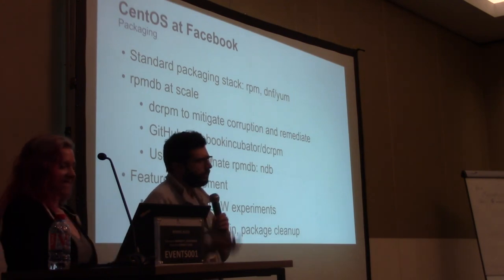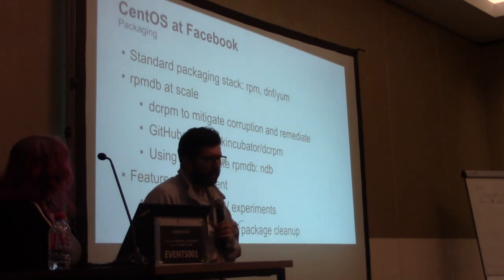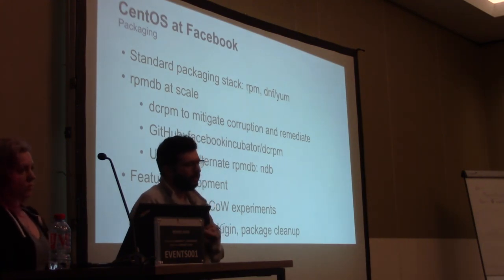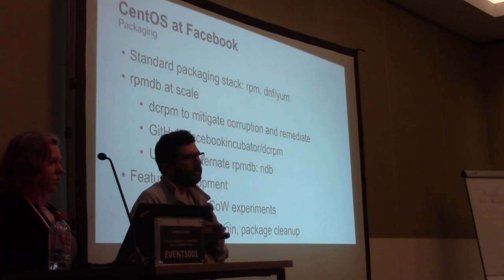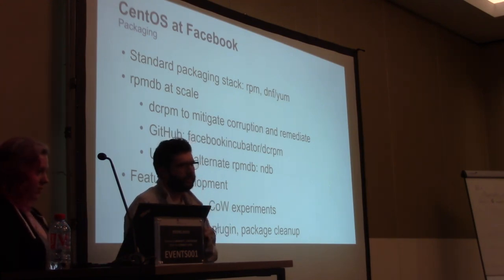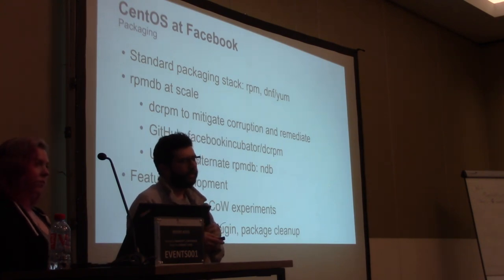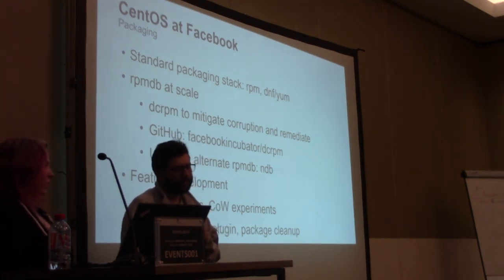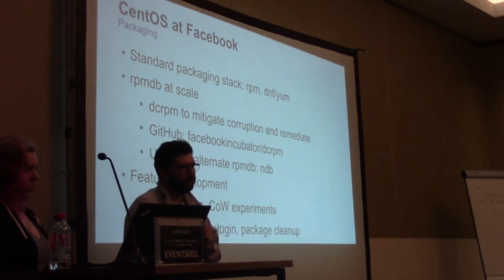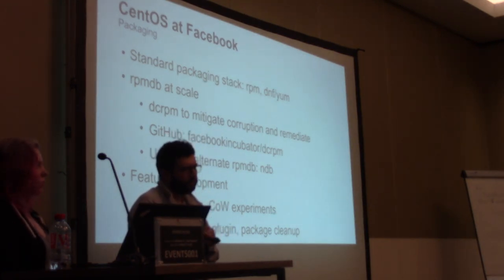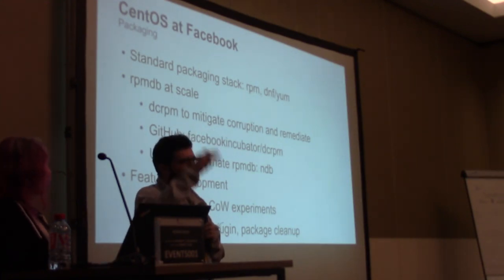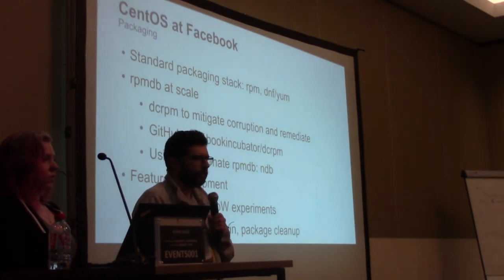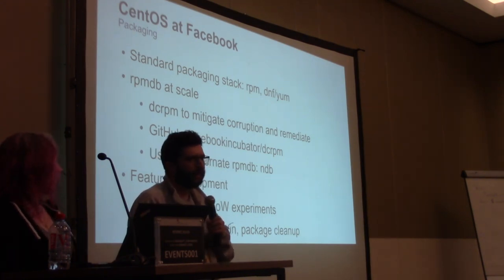On the packaging side, we use the standard RPM packaging stack — RPM, DNF, and YUM. Over the years we've found a number of challenges around running RPM at scale, especially related to the RPM database. The RPM database nowadays is BerkeleyDB, which is interesting in that, among other things, it requires taking a write lock even when you're reading. If you have multiple concurrent operations on the database, there is a very high chance of corruption. We can reliably get BerkeleyDB corruption on a sizable portion of our fleet on a per-minute basis. To mitigate this, we wrote a tool called db_rpm that essentially looks at machines with corruption and heals the database in various ways to make it usable and uncorrupted. This is on GitHub and runs on Linux and on macOS, because we also have the pleasure of running RPM on macOS.